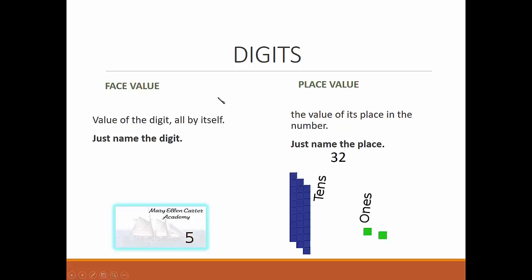Face value. Place value. The face value is the value of the digit all by itself. Just name the digit: five, three, two. The place value is the value of its place in the number. Just name the place: tens, ones.